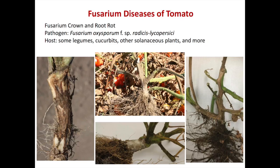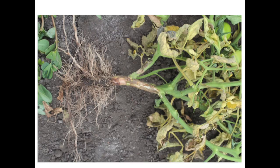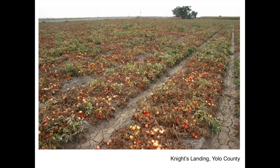For fusarium crown rot, you have the crown that is rotted. There's a lesion on the crown, sometimes on the stem — this is a dry, brown lesion on the crown or stem. The root is also this color, the vascular tissue is this color, and you can see whole plant wilting and yellowing.